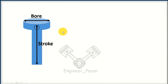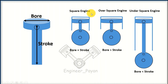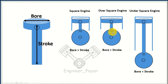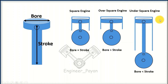With the bore and stroke, we can classify engines into 3 types. First, the over-square engine and the under-square engine. When bore and stroke are equal, it is a square engine. The bore is the diameter and the stroke is the stroke length. In the bullet engine, we use a specific type based on these numbers.